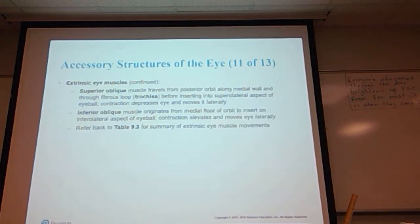In other words, it makes you look down and away or down and out to the outside. The inferior oblique muscle originates from the medial floor of the orbit and inserts on the inferior lateral aspect of the eye. Contraction of this muscle elevates and moves the eye laterally. So the superior oblique muscle is used to look down and to the outside of your body, and the inferior oblique muscle is used to look up and to the outside.